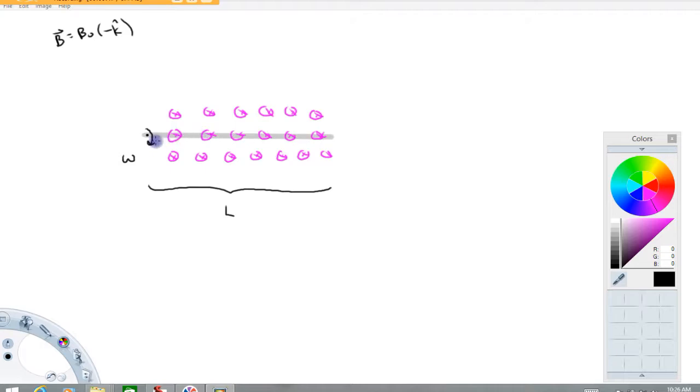So first of all, why are we getting a voltage? Imagine maybe a positive charge carrier somewhere in this bar. It never matters whether you're looking at pluses or minuses, you just have to be consistent.